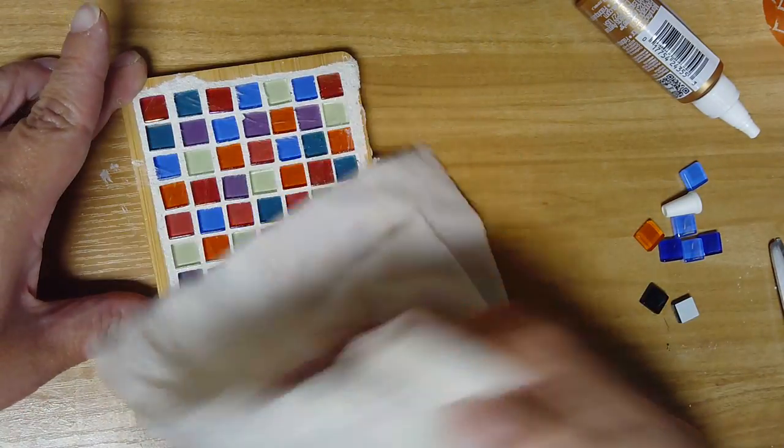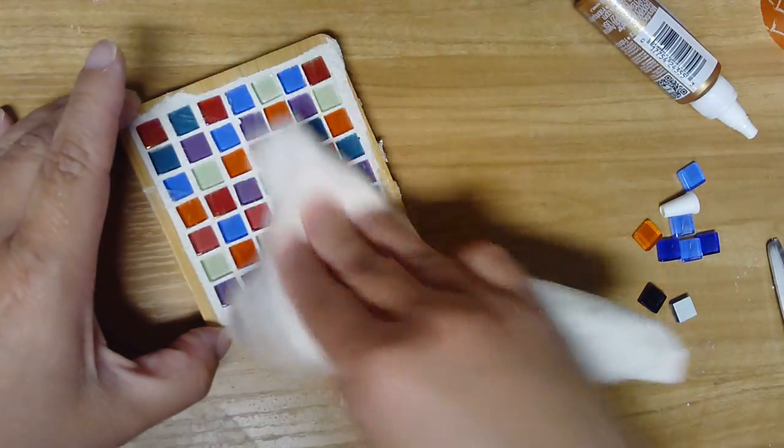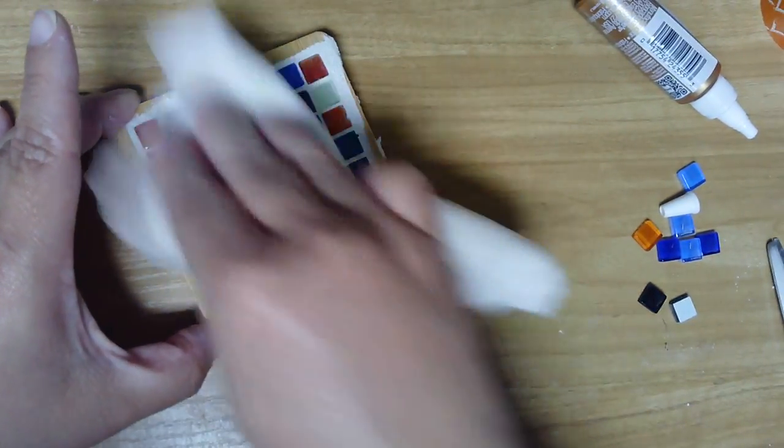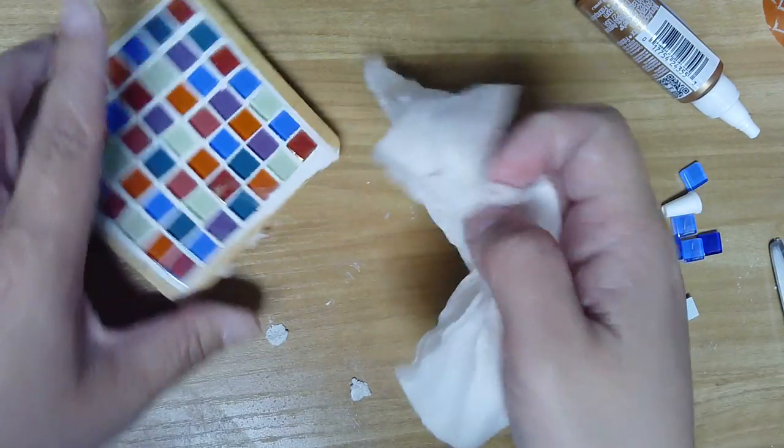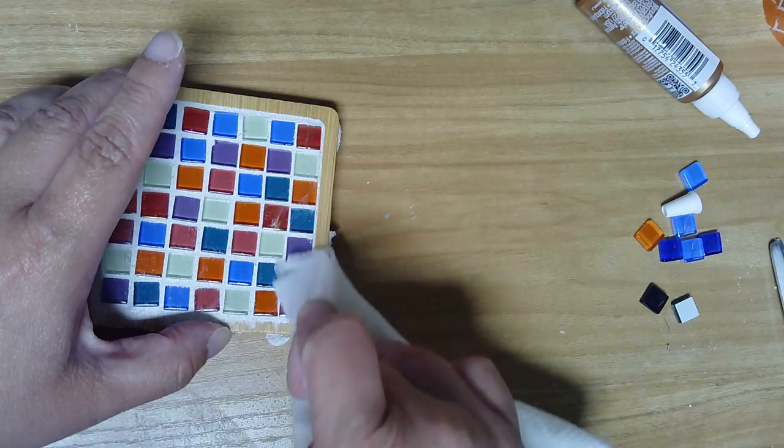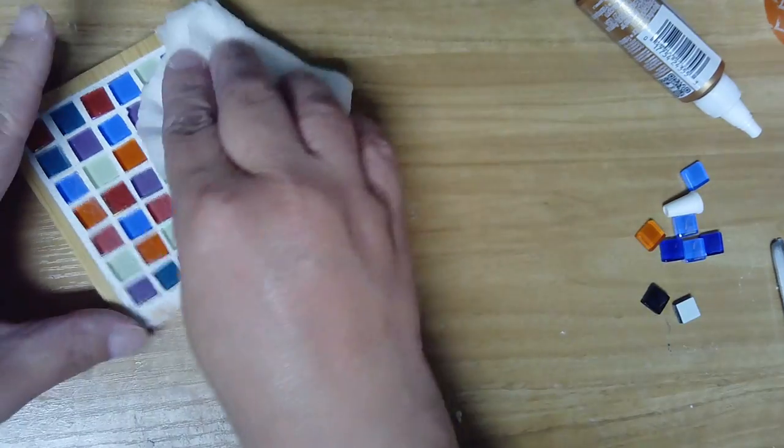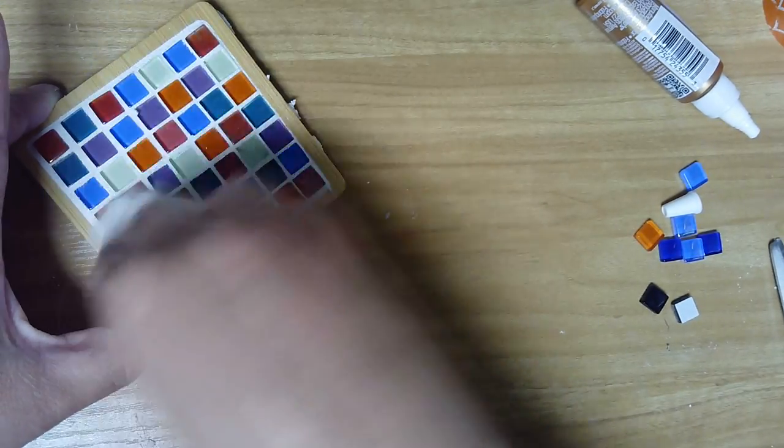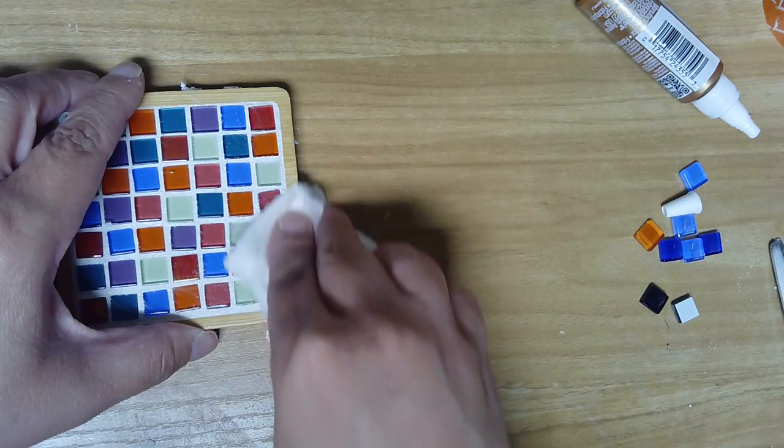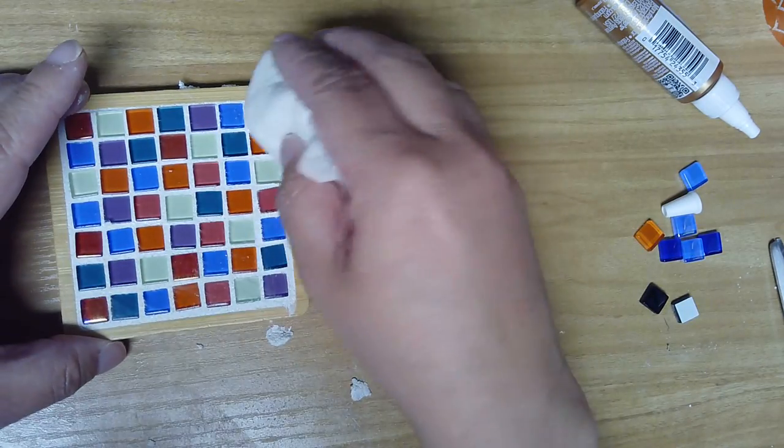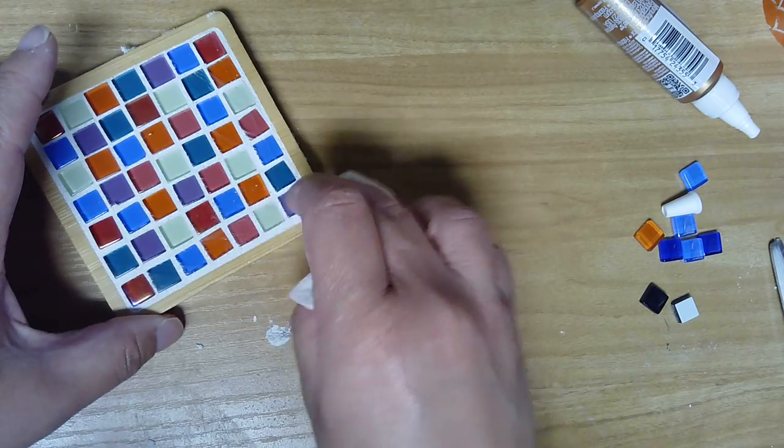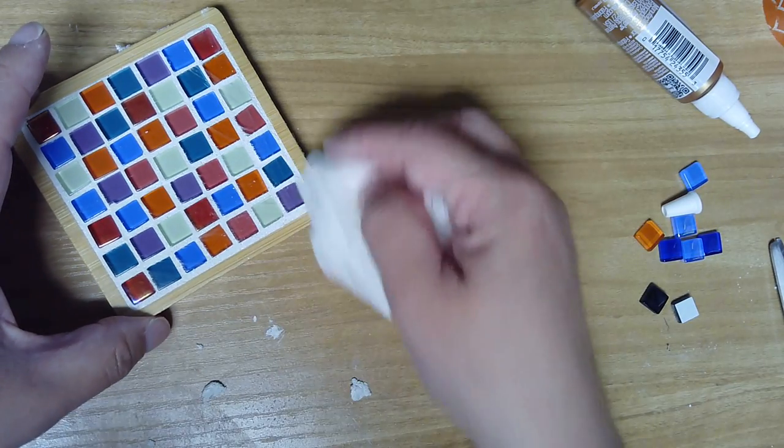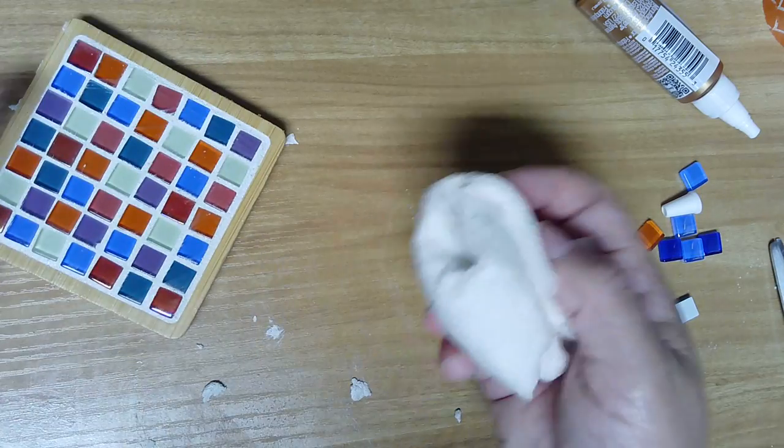And you just wipe the top until you get all of the extra grout off. And if you notice that there are some spots where maybe there are gaps, if you've got any leftover grout you can go ahead and redo the process just in those little spaces.